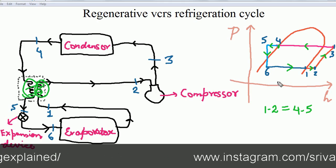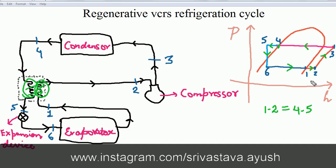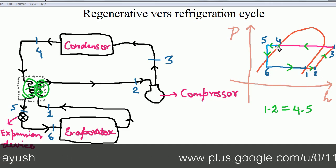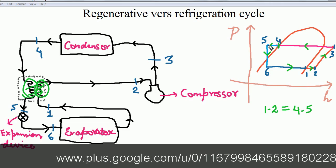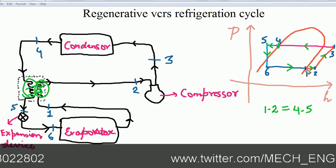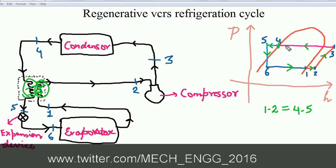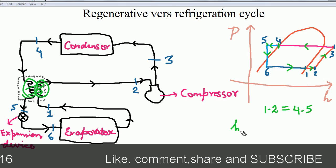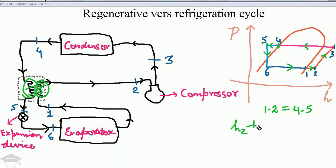take 100% efficiency or no irreversibility in the system, then this superheat is equal to the subcooling. This line, 1 to 2, is equal to 4 to 5. That means the difference h2 minus h1 is equal to